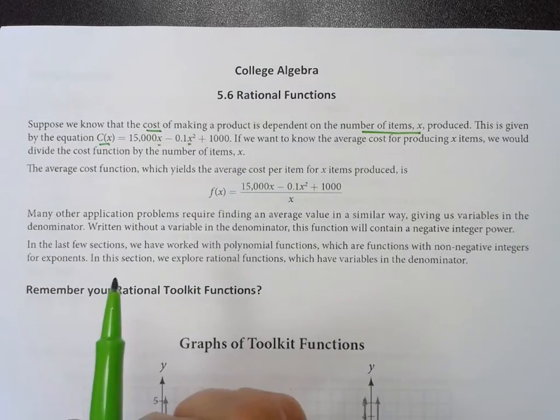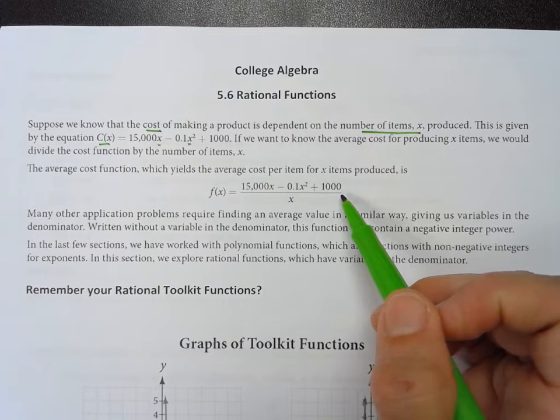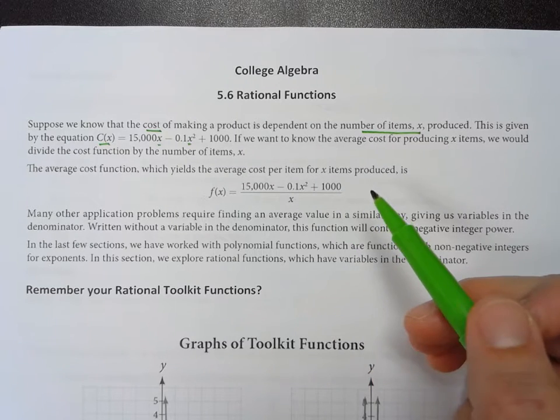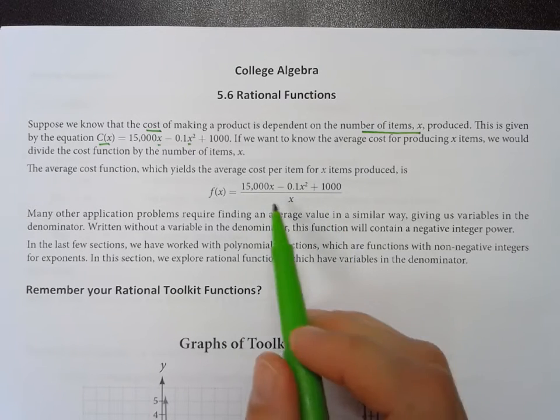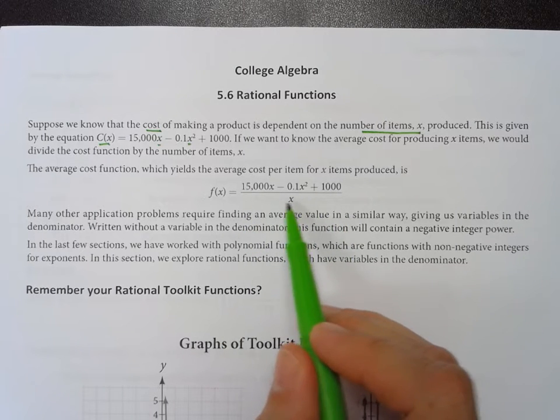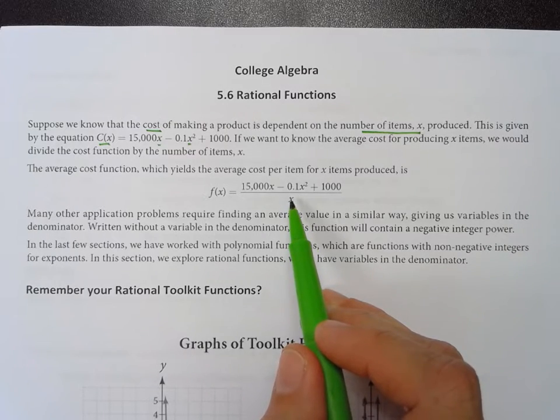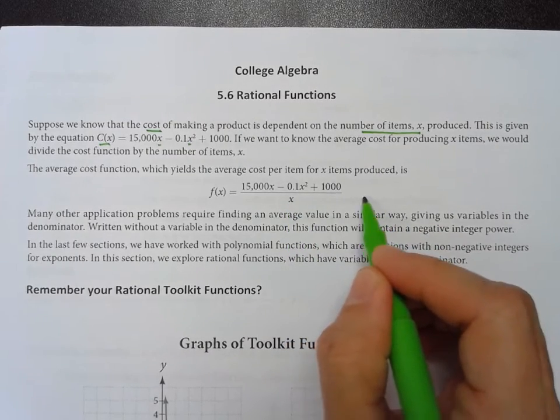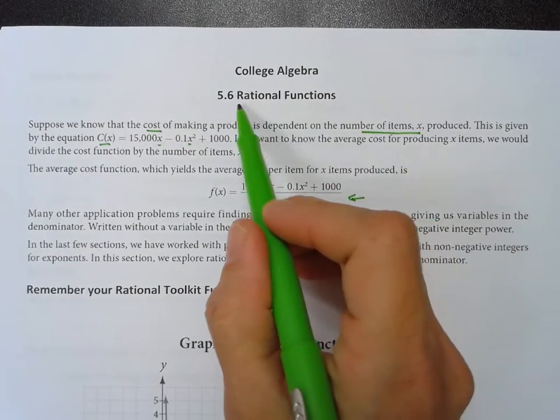That should make sense. If you want to know the average cost of something, you divide it by how many you buy. So if this is our cost function, if we divide it by how many items there are, it would give us the average cost per item. You'll notice that doing this gives us a variable in a denominator. That is what makes a rational function.